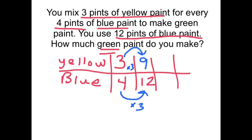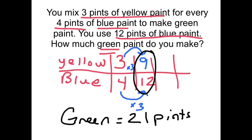So to find the amount of green paint, I need to add, because we're mixing it together. I need to add these two parts together. So nine and twelve make 21 pints of paint.